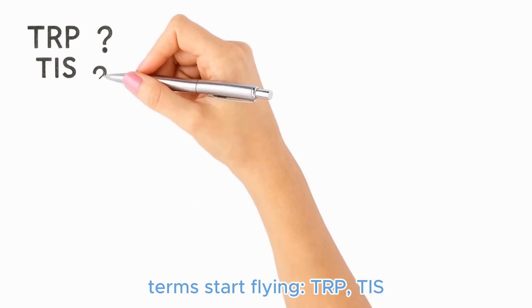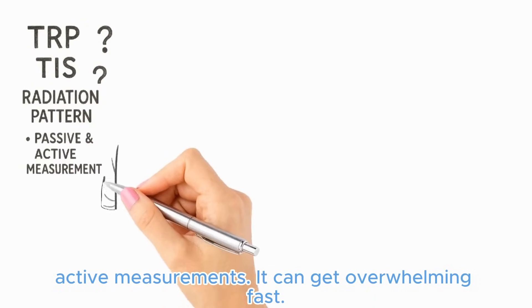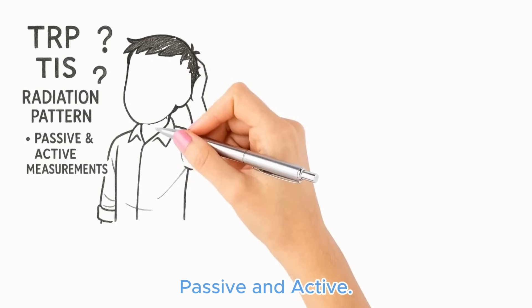Terms start flying: TRP, TIS, radiation patterns, passive, active measurements. It can get overwhelming fast. There are two key types of antenna measurement, passive and active.